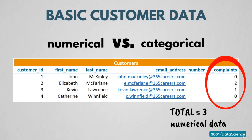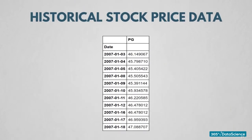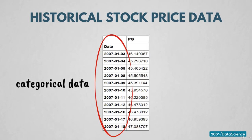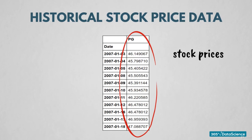Another example we can look at is daily historical stock price data. This is what we use in our Python for Finance course. In the dataset you see here, there's a column containing the dates of the observations, which is considered categorical data, and a column containing the stock prices, which is numerical data.